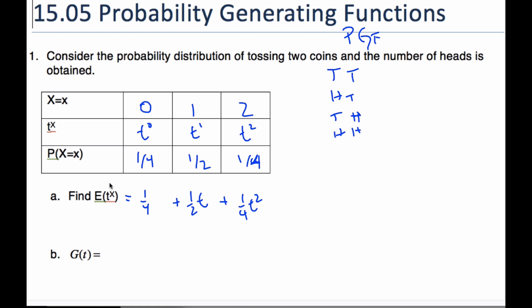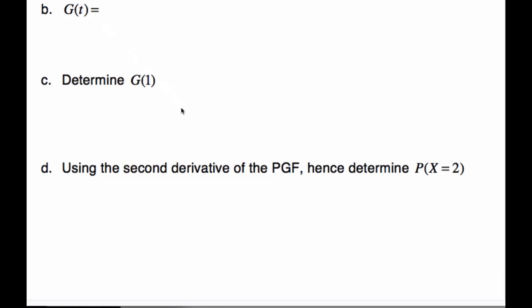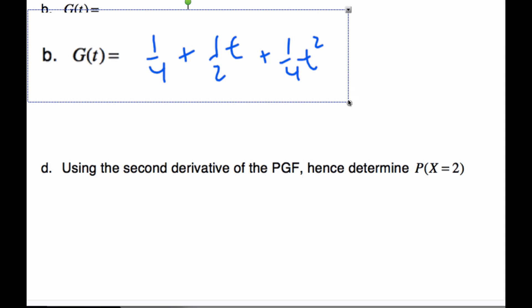And this expectation of t to the x is what a probability generating function is. Because this is g of t, where t is really just the placeholder of the outcomes of probability of your random variable. And so g of t is simply one quarter plus half t plus one quarter t squared. This means the outcome was two, the outcome was one, and the outcome was zero. And so I'm going to take this here and let's use it on the next page because it refers to it.